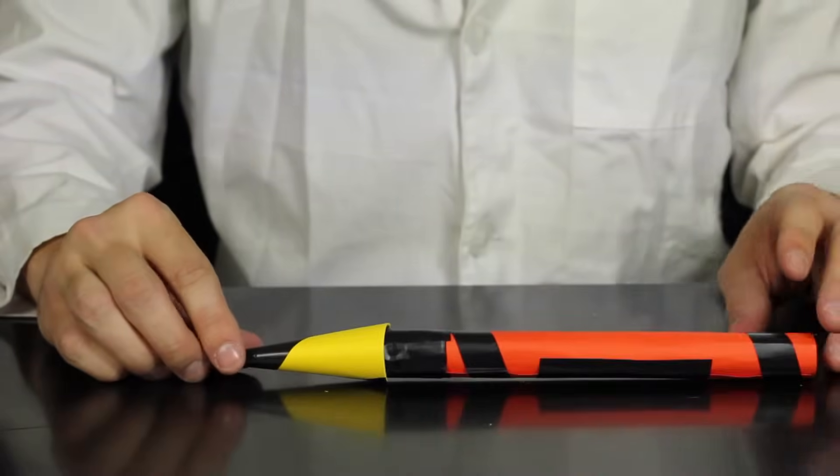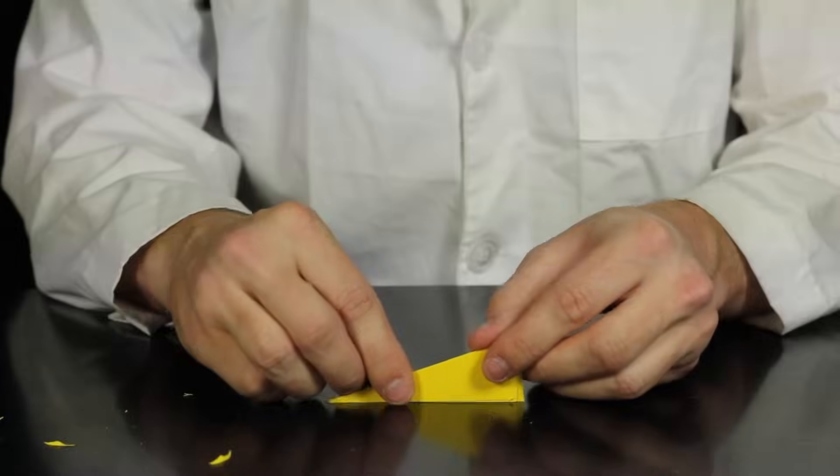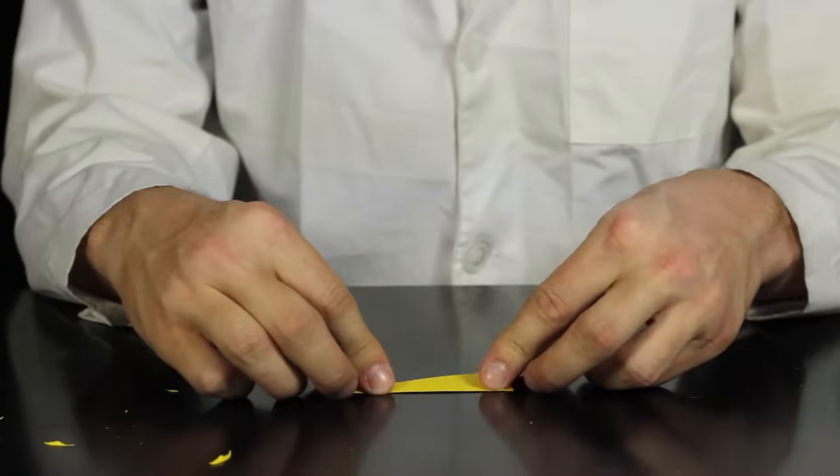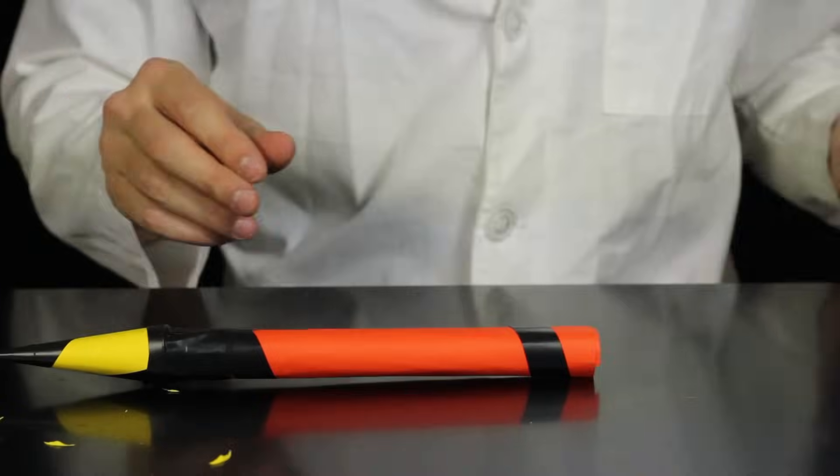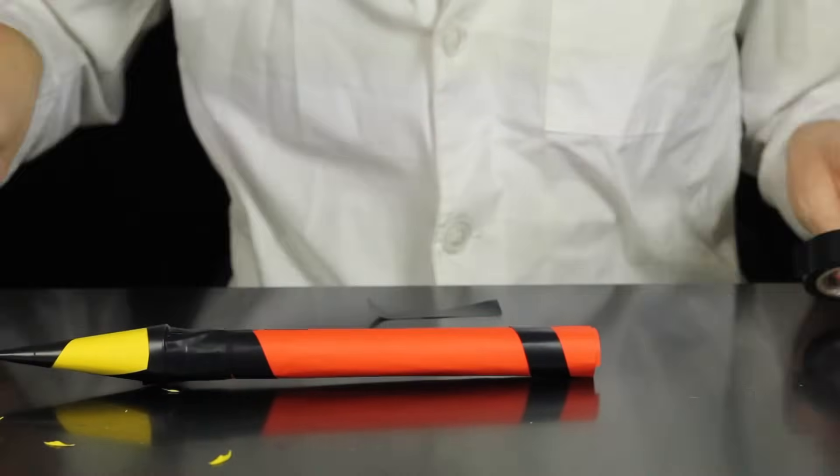Once your nose cone has been taped in place, now you're ready for your tail fins. Start by designing your tail fins on a blank piece of paper. Here I've decided to use three triangle tail fins, but you can use a different number of tail fins or decide on a different shape for your tail fins altogether.